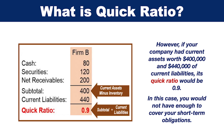However, if your company had current assets worth $400,000 and $440,000 of current liabilities, its quick ratio would be 0.9. In this case, you would not have enough to cover your short-term obligations.